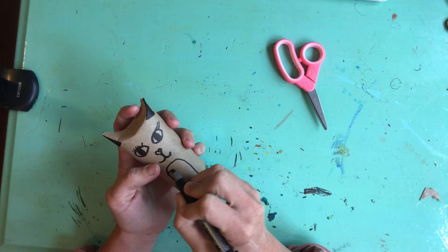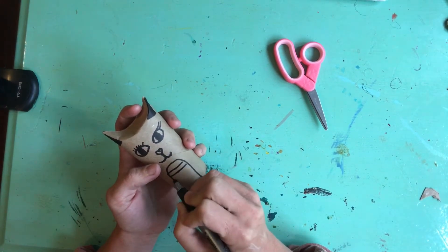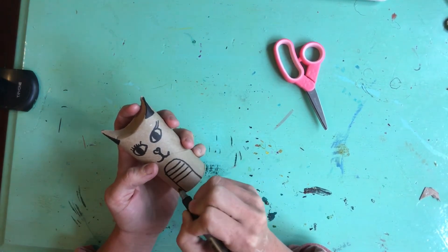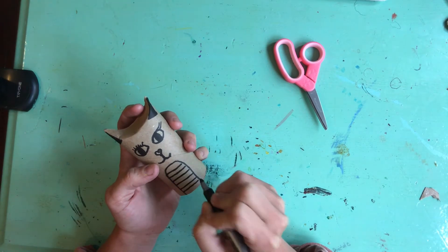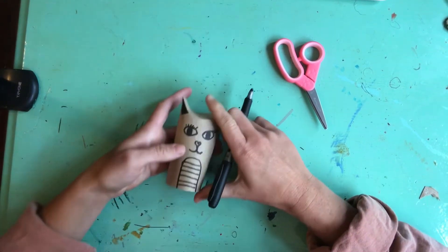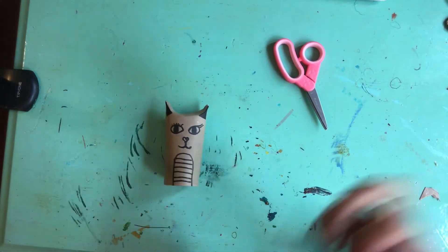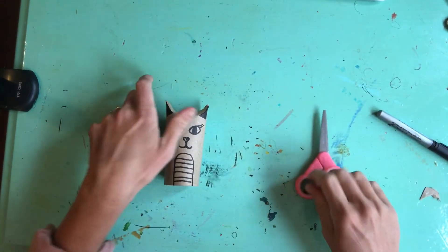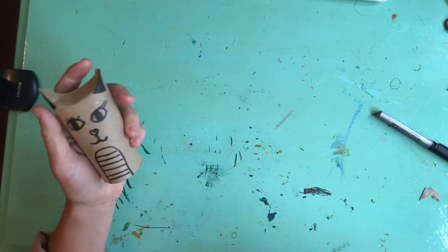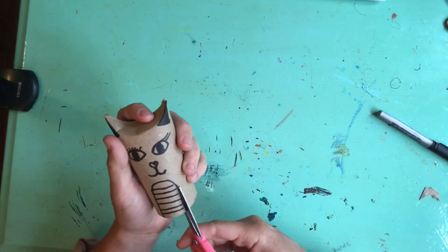And that belly, you could do some lines across and you can create kind of a pattern on the cat's tummy. And you could color that in - now this is option one. Or option two, you can cut out that belly.